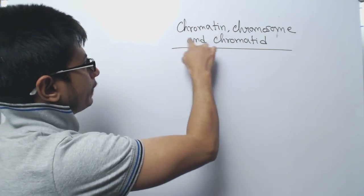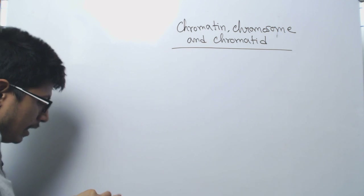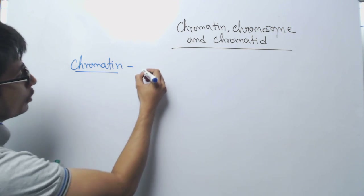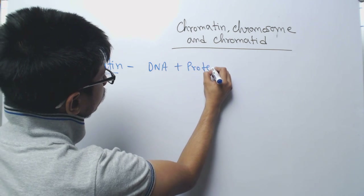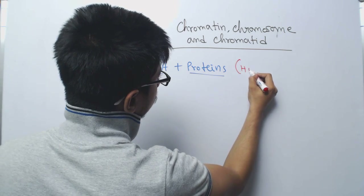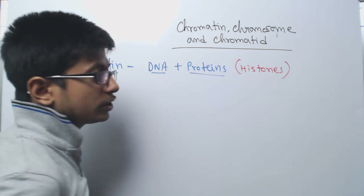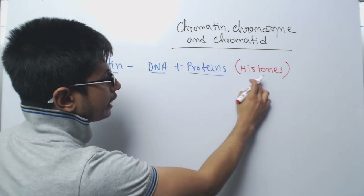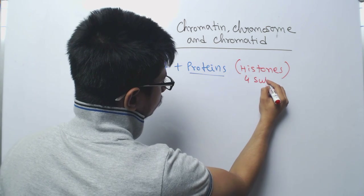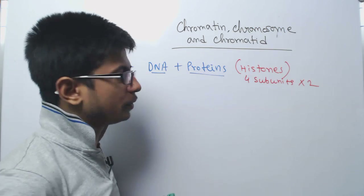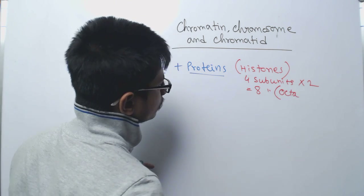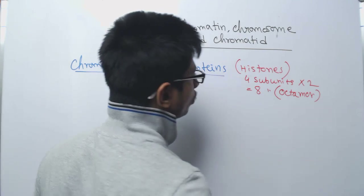First things first — chromatin. If I divide it into two parts, it will be DNA plus protein. The protein we are talking about here is histone. Histone is a DNA-binding protein, and histone is not made with one subunit — it is made with four different subunits repeated twice, so ultimately eight subunits, and it is known as the histone octamer.